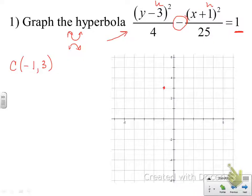The horizontal distance, remember, is going to be the square root of the number underneath the x squared term. So we're going to come out 5 units to the right and make a point, 5 units to the left and make a point. And the vertical distance is the square root of the number that's underneath the y squared term. So we're going to come up 2 units and down 2 units. Very similar to an ellipse, right?